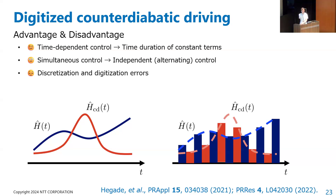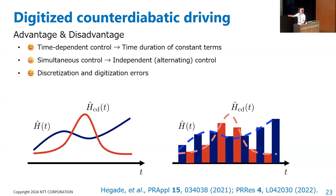This is the idea of counter-diabatic driving in a digital context. In counter-diabatic driving, we have two time-dependent Hamiltonians: the target Hamiltonian and the counter-diabatic Hamiltonian to suppress non-adiabatic transitions. The simultaneous control of two time-dependent Hamiltonians is difficult to digitize. We want to consider the digitization of this system. We apply the target Hamiltonian and counter-diabatic Hamiltonian in an alternating way — this is digital counter-diabatic driving. The time-dependent control problem becomes a problem of controlling time durations.